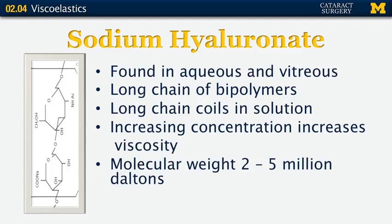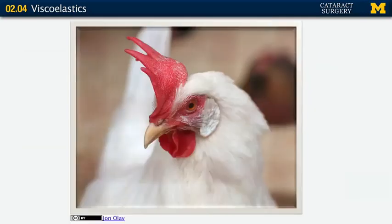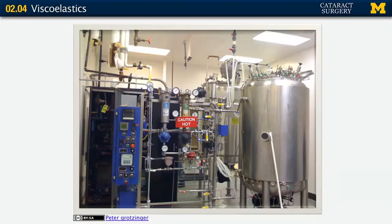A little bit about sodium hyaluronate: it's found in the eye, in the aqueous and the vitreous. It's a long chain biopolymer and those long chains coil in solution. If you increase concentration, you obviously increase viscosity because of the intermolecular interactions. The molecular weight of sodium hyaluronate molecules is between 2 and 5 million Daltons. Where do we get sodium hyaluronate for our viscoelastics? From rooster combs — and fortunately, we also get it from bacterial fermentation.